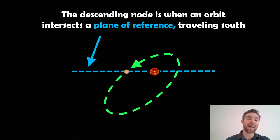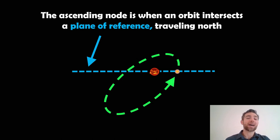As it passes down through the plane of reference, that is known as the descending node, and it's traveling south through that plane of reference. When it goes to the other one, that will be the ascending node, and that's where it passes up through the plane of reference traveling north.